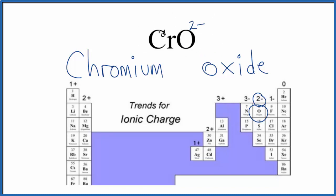This all has to add up to zero. To have a net charge of zero, we have to have a two plus. So because of this two plus ionic charge on the chromium, we write this between the chromium and the oxygen. The Roman numeral chromium two oxide.